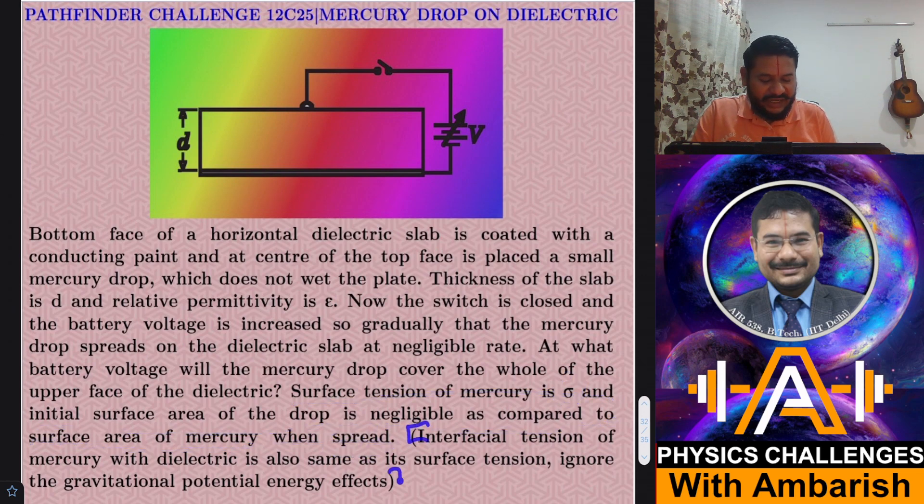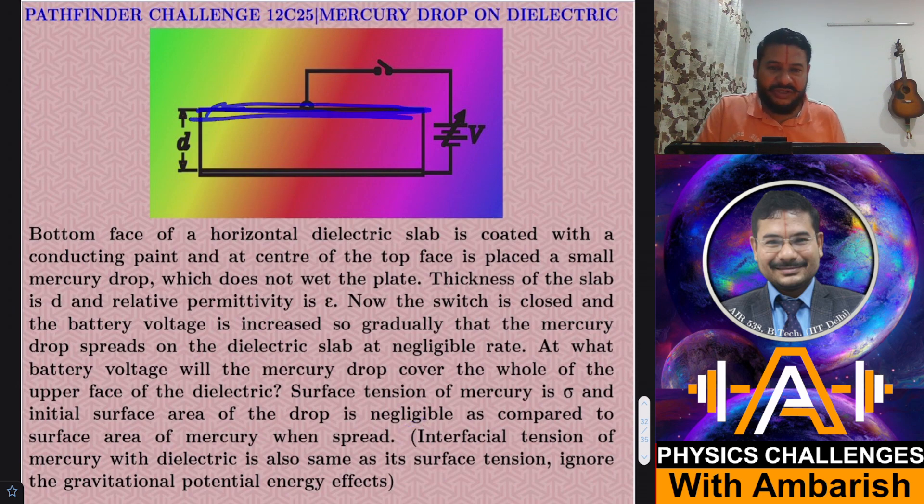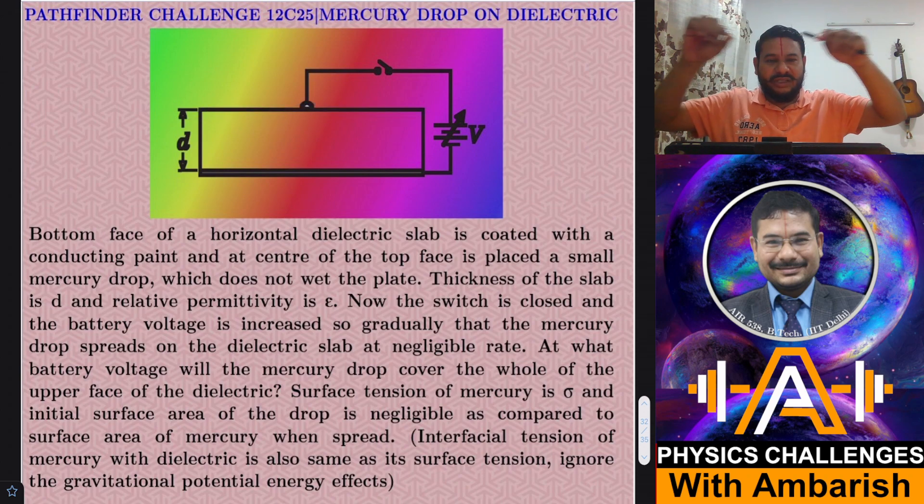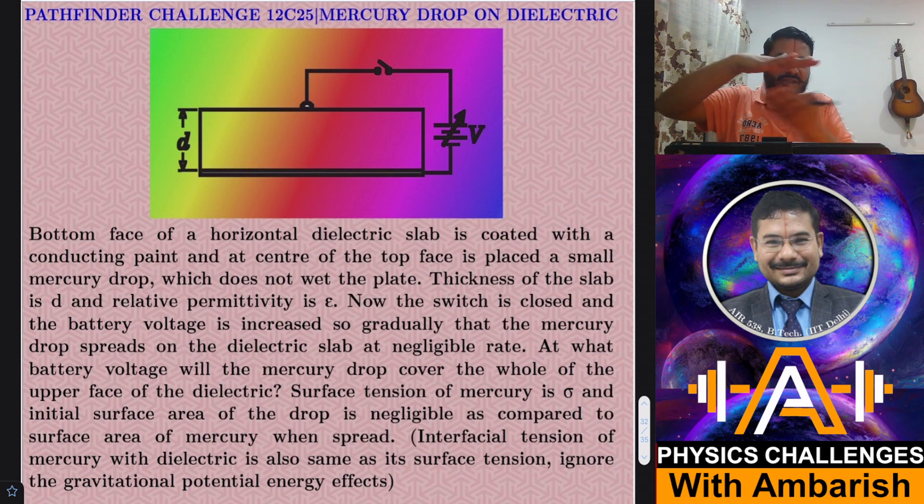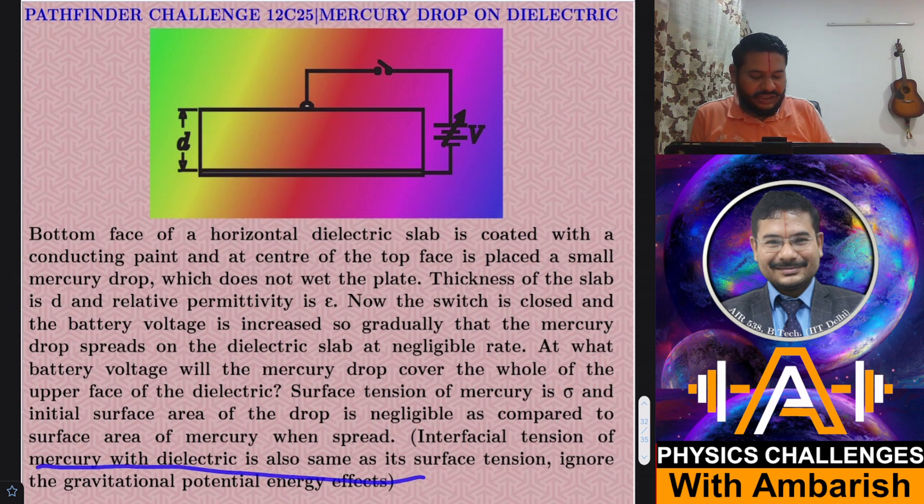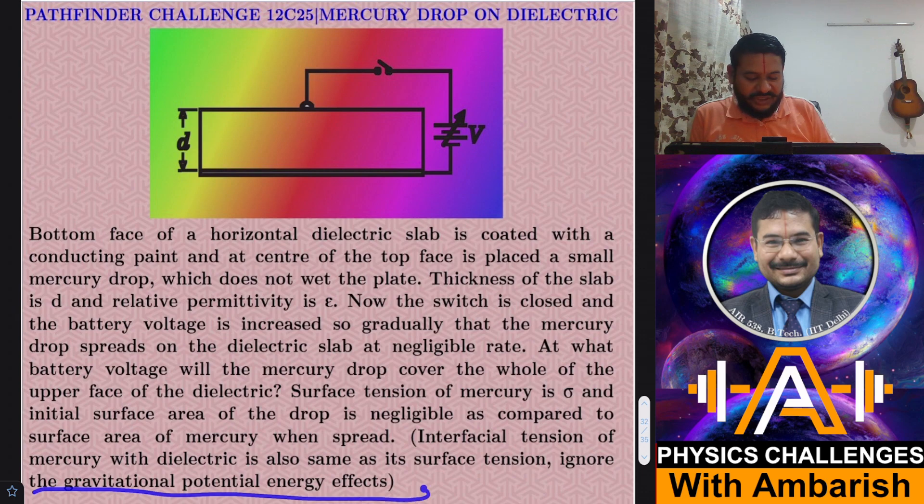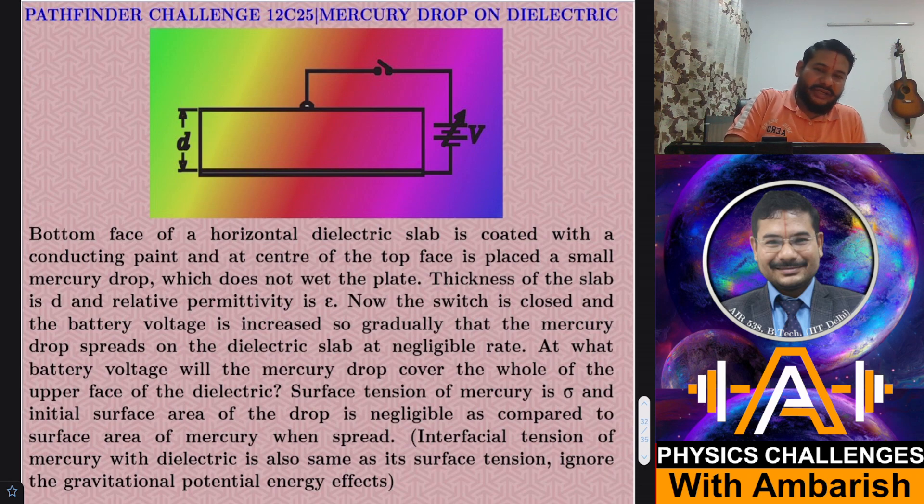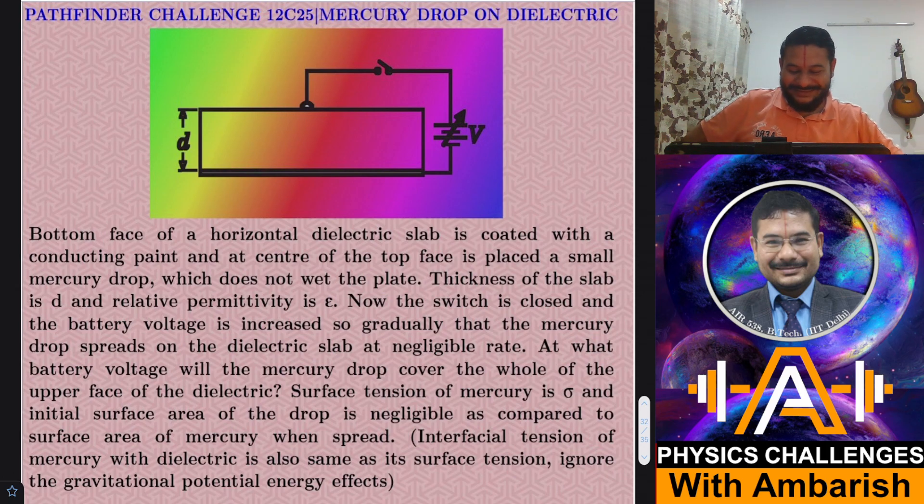And some assumptions I have added, which were not mentioned in the question, but they're important. Otherwise, we keep wondering what to do. So when the drop is spreading out, there is also something called interfacial tension. The drop is spreading just like on the air liquid interface. We have surface tension on the mercury and dielectric interface. We have got what is known as interfacial tension and the question should have mentioned the interfacial tension, but it's not mentioned. So I'm just taking interfacial tension of the mercury with the dielectric is also same as its surface tension and ignore the gravitation potential energy effect. You can give it a try. I will get into my analysis.